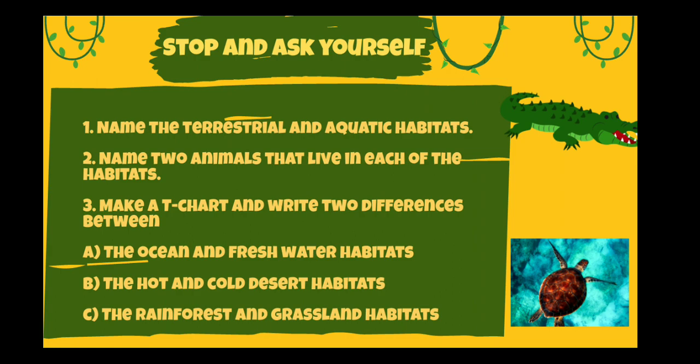At the end of this lesson, let's answer some questions. Number one: name the terrestrial and the aquatic habitats. Number two: name two animals that live in each of the habitats. Number three: make a T-chart and write two differences between the ocean and freshwater habitats, the hot and cold desert habitats, and the rainforest and grassland habitats.